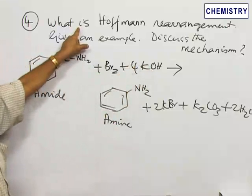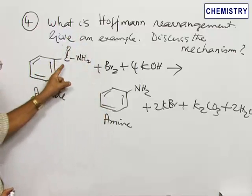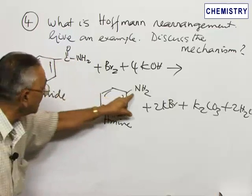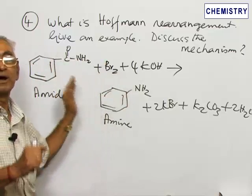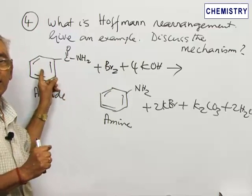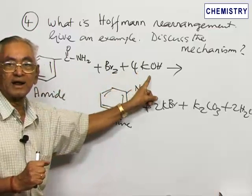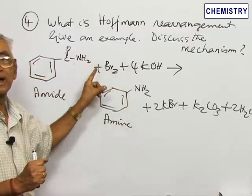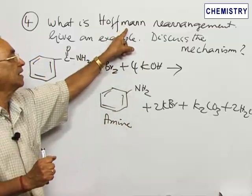This is known as Hofmann rearrangement. You can see that the CO group gets cut off from the molecule and then the NH₂ group gets directly attached to the phenyl ring. By definition, Hofmann rearrangement is the reaction of a primary amide with bromine under alkaline conditions, converting it to a primary amine. This rearrangement is referred to as the Hofmann rearrangement reaction.